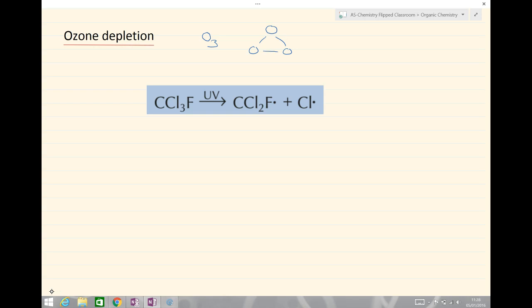The chlorine radical then can react here with ozone. And that is, as we have seen before, a type of propagation forming once again an oxygen molecule and another radical. So we see another example of a propagation step.